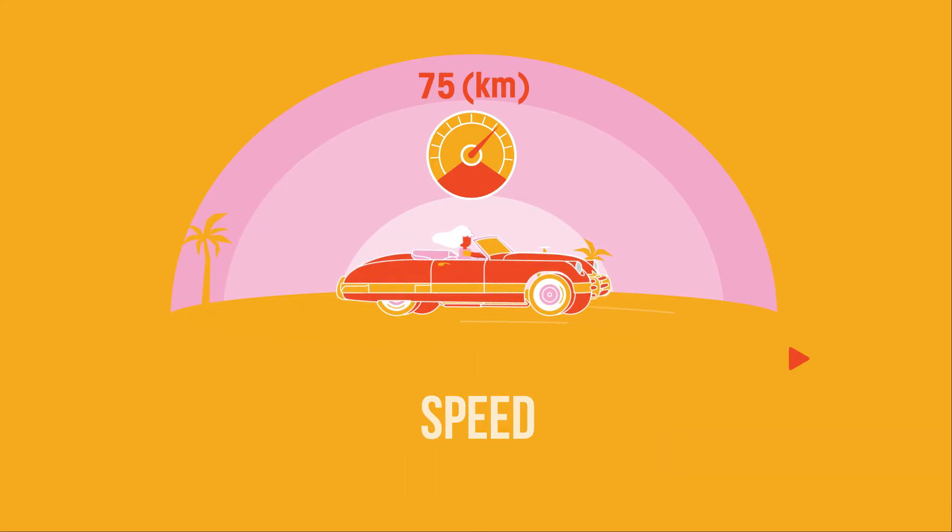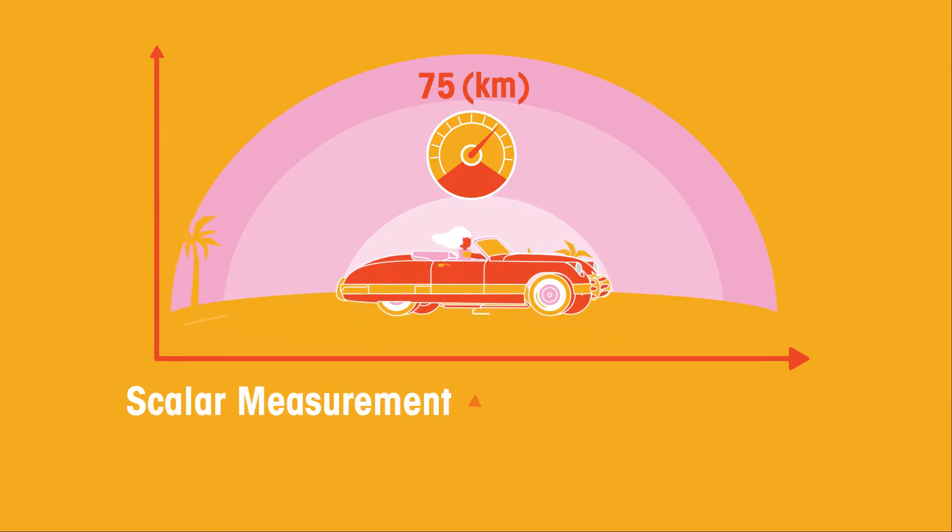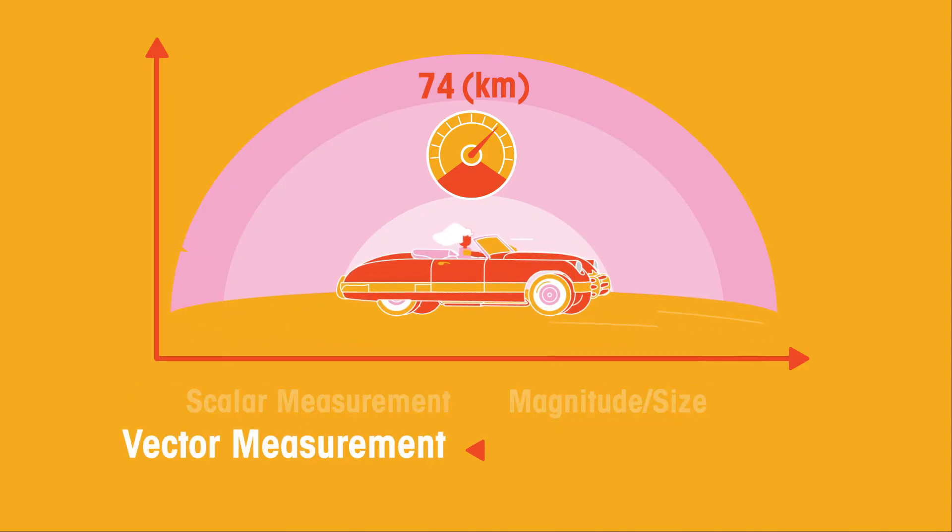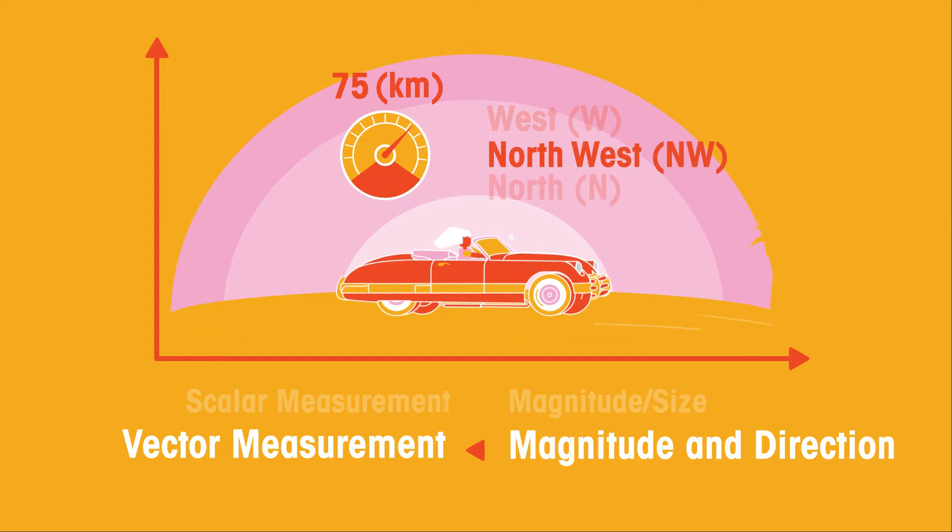So to recap, speed is a scalar measurement. This means it only has a magnitude or size. In comparison, velocity is a vector measurement and so it has both a magnitude and a direction. Velocity therefore tells us how fast an object is moving as well as the direction the object is moving in.